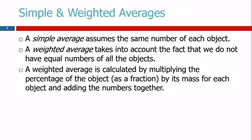So we use what's called a weighted average. A weighted average takes into account that we have lots of different things, and we don't have an equal number of the different kinds. So you take a weighted average by multiplying the percentage of the object expressed as a fraction by its mass for each object and then adding the numbers together.